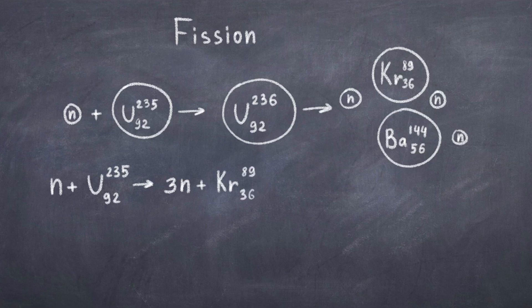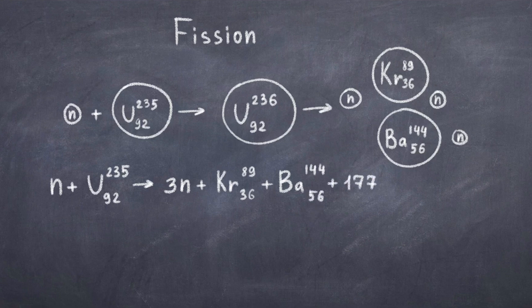This process then sends out more neutrons that can split up more atoms, and thus you have a chain reaction. This is how nuclear energy is produced.